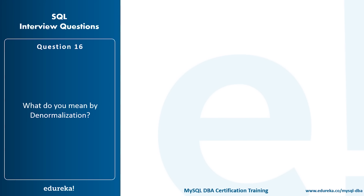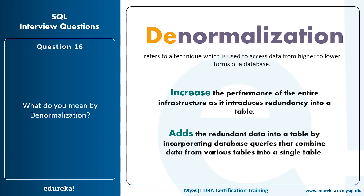What do you mean by denormalization? Denormalization is a technique used to access data from higher to lower forms of a database. It increases performance of the entire infrastructure by introducing redundancy into the table and adds redundant data by incorporating database queries that combine data from various tables into a single table.